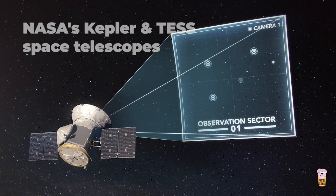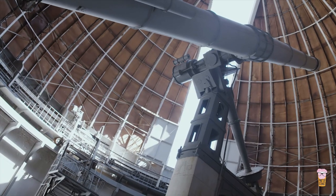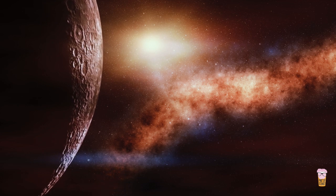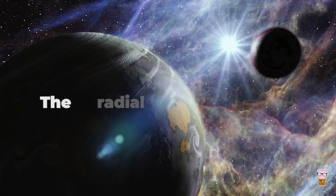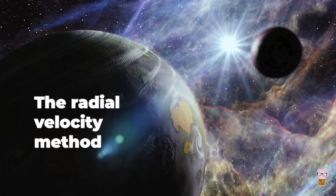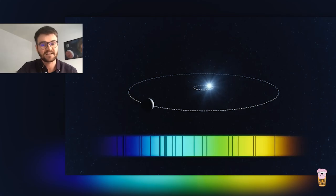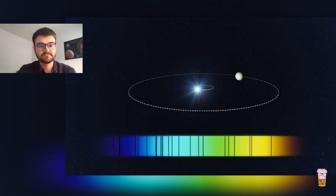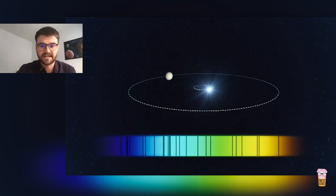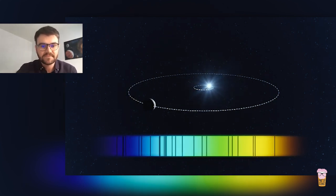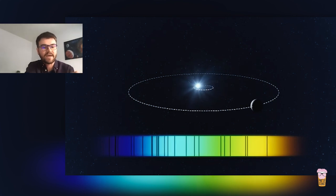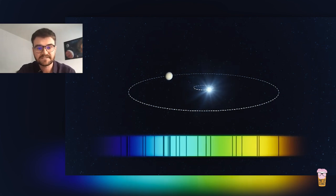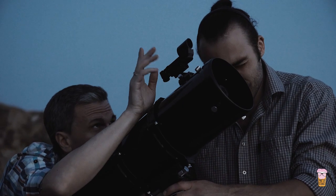Once a planet is detected, we can use some of the largest telescopes here on Earth to measure the mass from the relative motion of the planet and the star orbiting each other. This is what we call the radial velocity method in astronomy. And it requires us to split the star's light into its component colors, what we call a spectrum. When the distant star is moving towards us relative to the planet, the spectrum gets a little bit of a boost. And when the star is moving away from us relative to the planet, it gets a little bit of a drag.